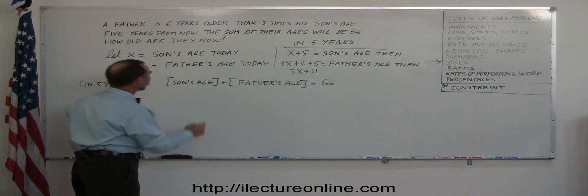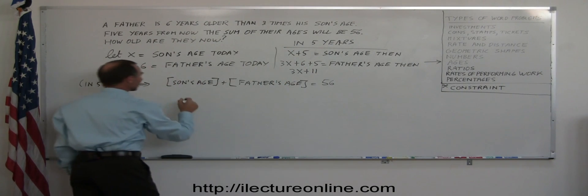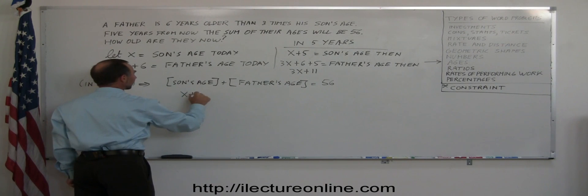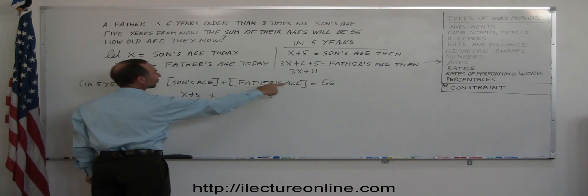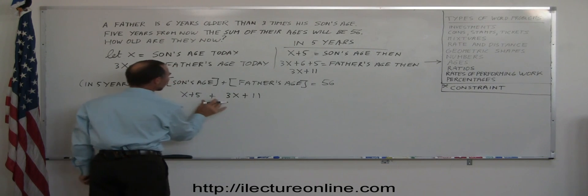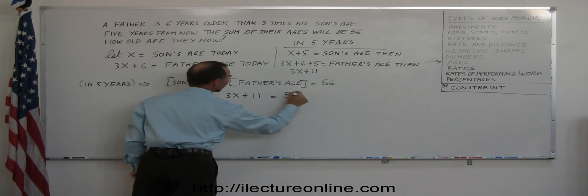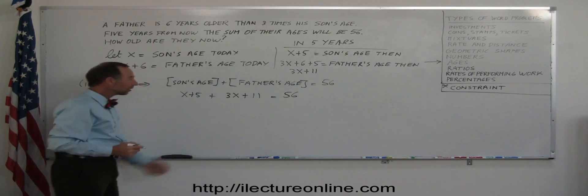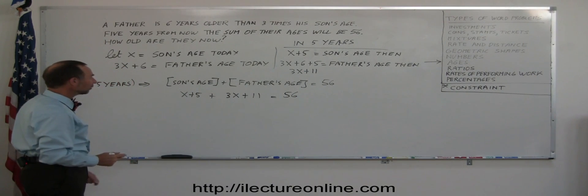So now we can plug in what these are equal to. We have defined them over here. Son's age in five years will be X plus five. The father's age in five years will be 3X plus 11. When we sum them together, we get 56. And now we have an equation, a linear equation in X that we can easily solve.